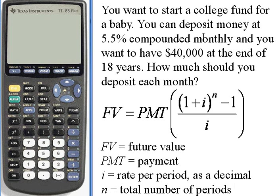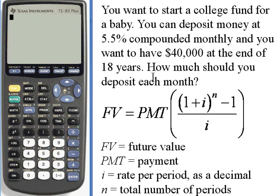Here's the problem we're working with. You want to start a college fund for a baby. You can deposit money at 5.5% compounded monthly, and you want to have $40,000 at the end of 18 years. How much money should you deposit each month?